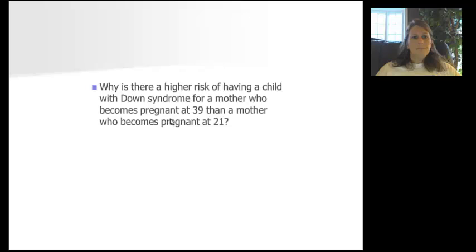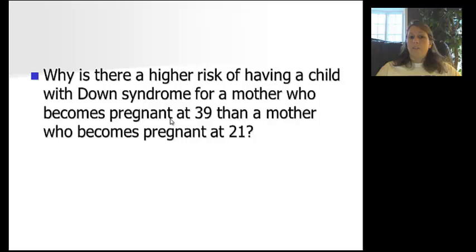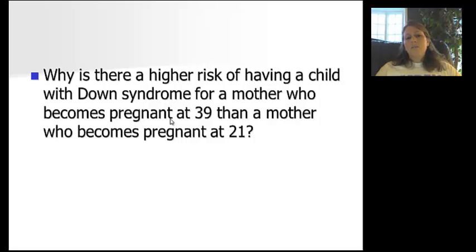Why are sperm shaped the way they are? The head contains the 23 chromosomes that will be delivered to the egg to form the zygote, embryo, and eventually the fetus. The flagella provides movement. Why is there a higher risk of Down syndrome for a mother who becomes pregnant at age 39 compared to age 21? Like refrigerator eggs that get old — the yolk darkens over time — aging eggs can have damaged chromosomes. The chromosomes may not separate properly during meiosis, causing a whole chromosome to go to one side. Ending up with three chromosomes at a particular location can result in birth defects such as Down syndrome, which is less likely in a woman in her early 20s.